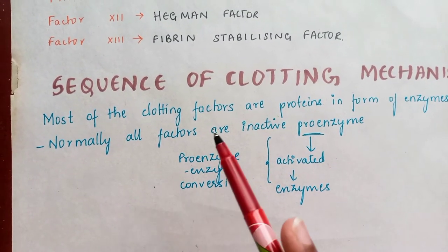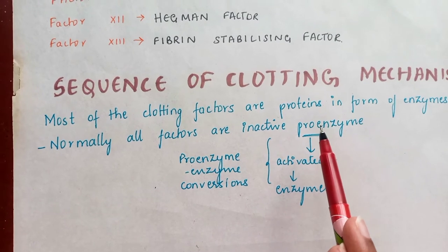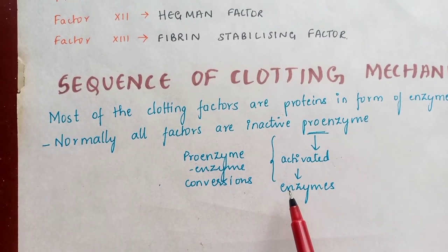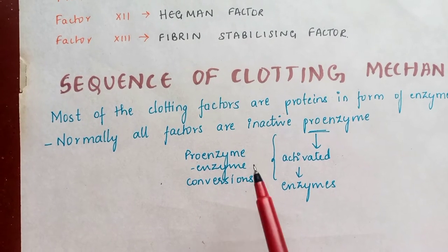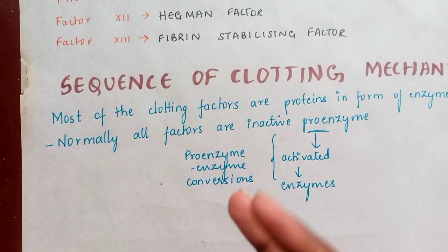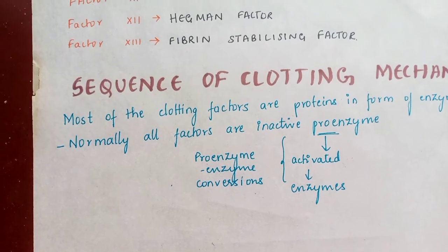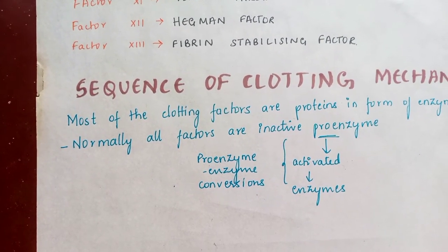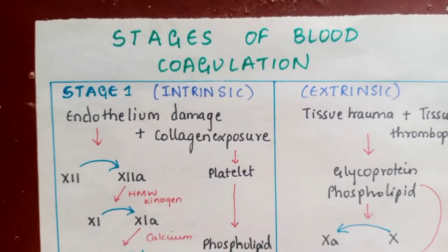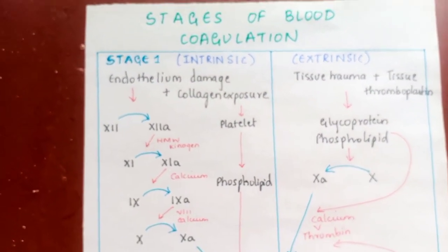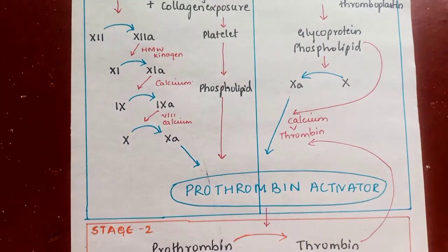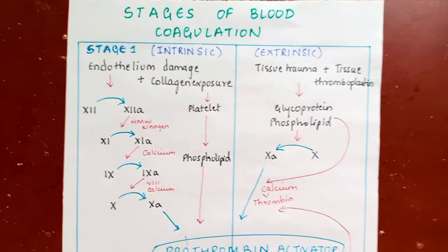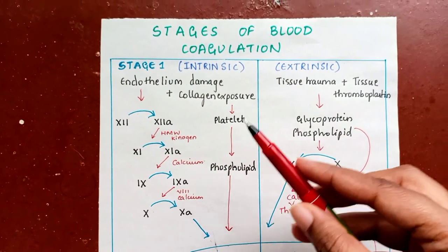Most of the clotting factors are proteins in the form of enzymes. These factors mentioned earlier are inactive proenzymes which get activated — so there is a proenzyme to enzyme conversion. There are three stages through which the clotting mechanism or coagulation cascade happens. I have made a flowchart which will make these stages easy to understand.